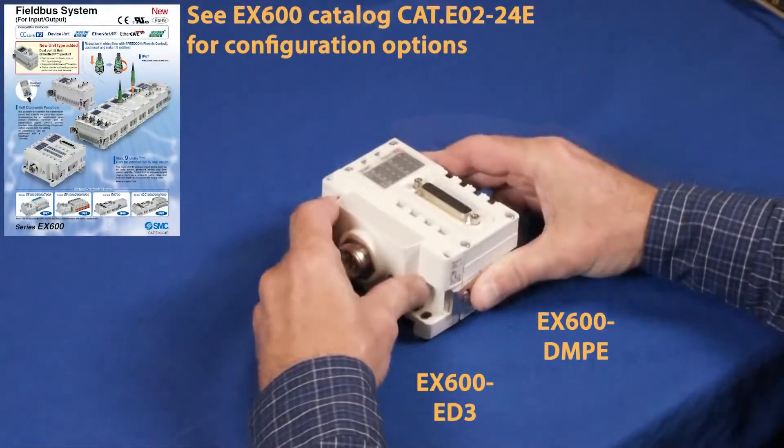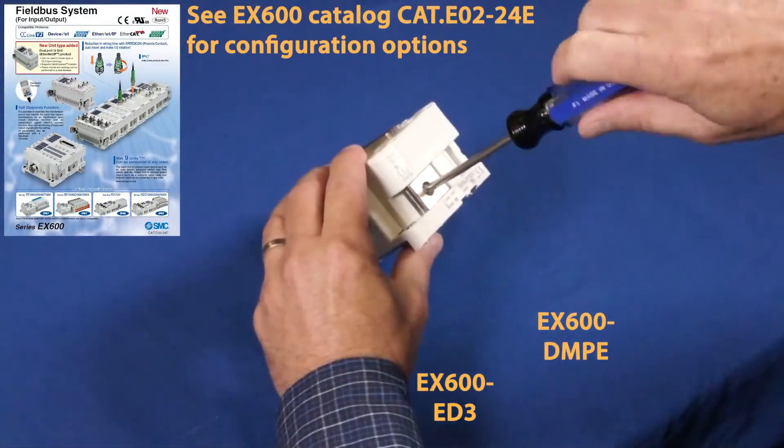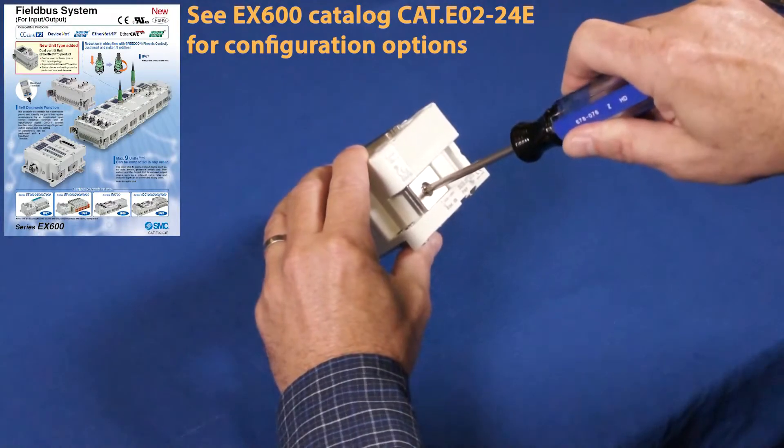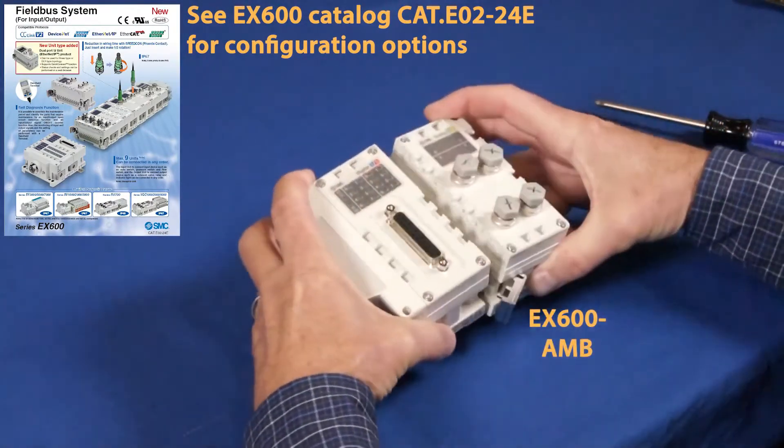First, we need to assemble the EX600 modules. Connect the I.O. module to the end plate. Add additional I.O. modules as needed.